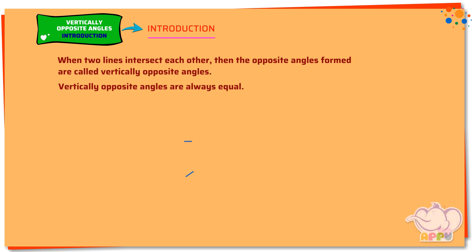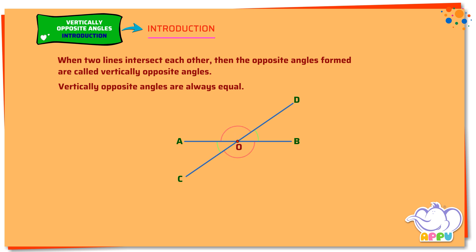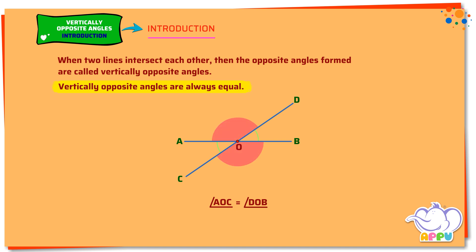In the figure, two straight lines AB and CD intersect at a point O. Four angles are formed at O. Here angle AOC and angle DOB are one pair of vertically opposite angles. Also, angle AOD and angle BOC are another pair of vertically opposite angles. Angle AOC equals angle DOB, and angle AOD equals angle BOC.